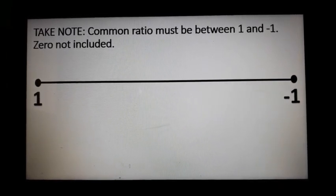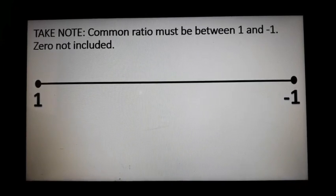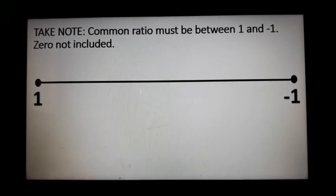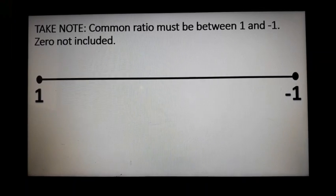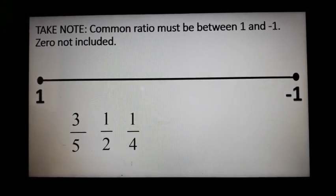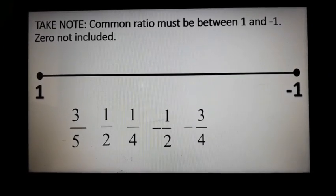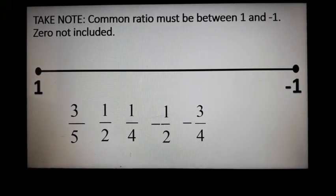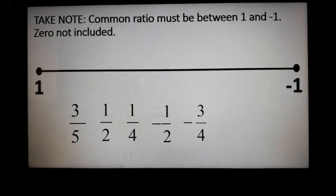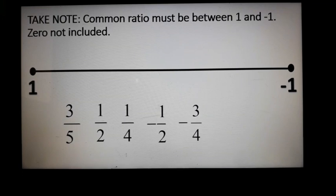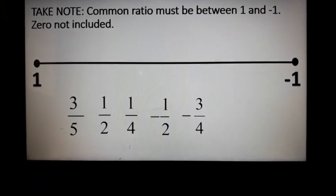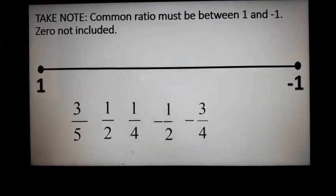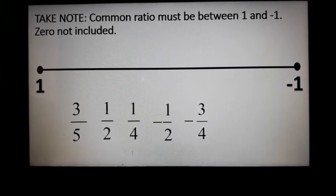This is the explanation of that idea. So, what is the common ratio between 1 and negative 1? Note that 0 is not included. So, examples of common ratios between 1 and negative 1 are: 3/5, 1/2, 1/4, negative 1/2, negative 3/4, negative 1/4, negative 1/3. Those are examples of common ratios between 1 and negative 1. When these are the common ratio of an infinite geometric sequence, we can find its sum, because the values get smaller and smaller.